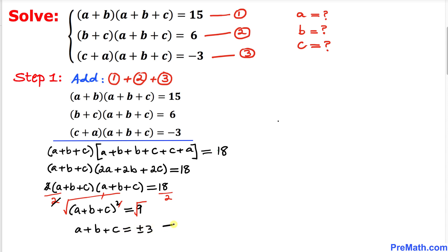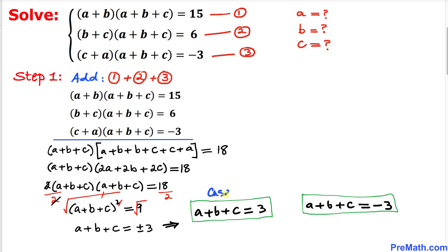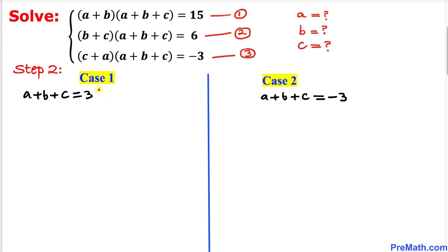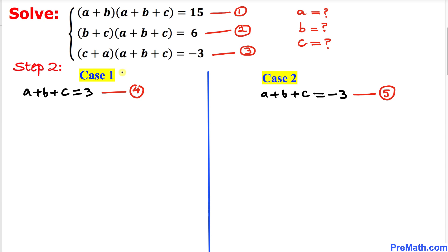Splitting the positive and negative signs, we have two values: a+b+c = 3 (Case 1, equation 4) and a+b+c = -3 (Case 2, equation 5). Let's take care of Case 1 first.